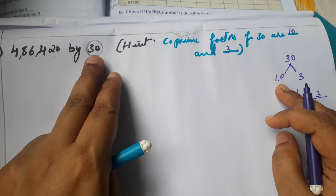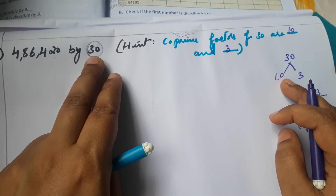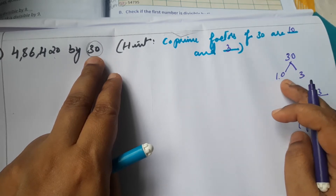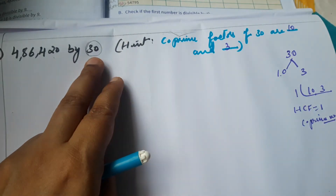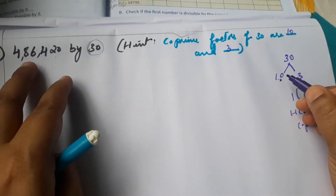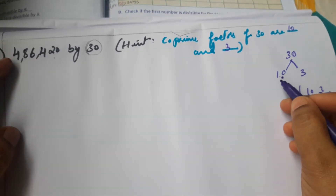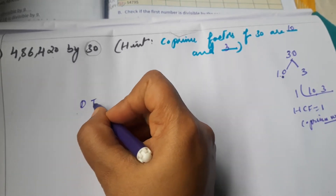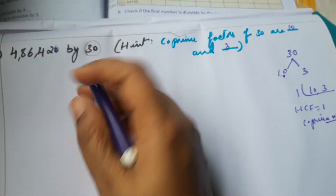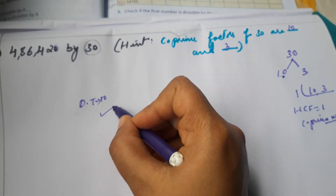Instead of directly dividing, we take the co-prime factors of the divisor. 10 is a very simple number and 3 is a small single-digit number, so we can easily apply the divisibility test rules. According to the divisibility test of 10: if the ones place digit is 0, then the whole number is divisible by 10. So this number is divisible by 10.